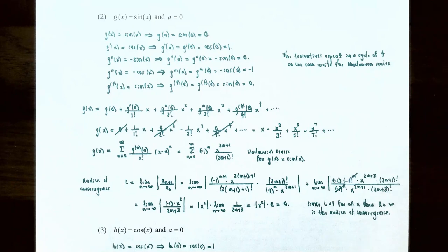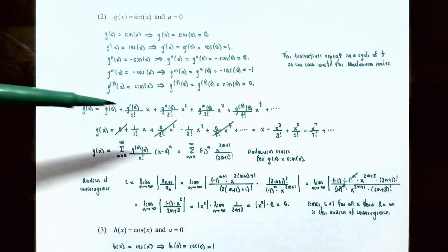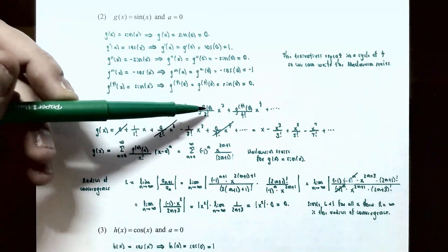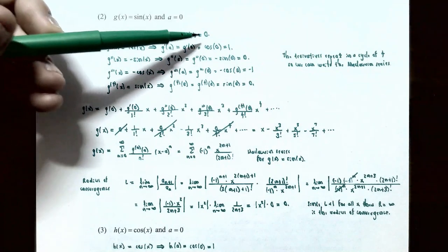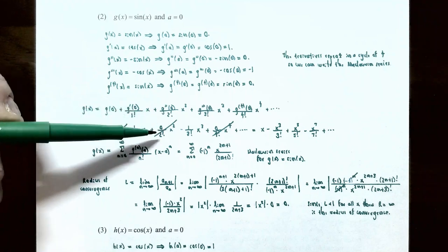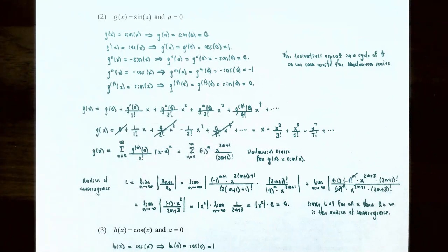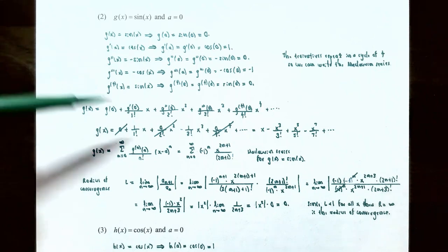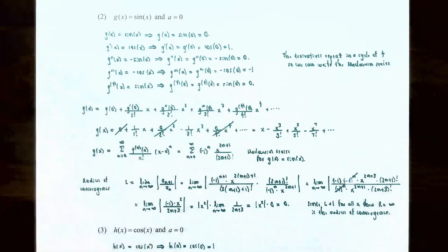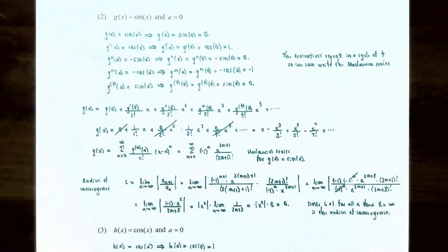Writing out the Maclaurin series: g(x) = g(0) + g'(0)·x/1! + g''(0)·x²/2! + g'''(0)·x³/3! + ... The even-order derivatives at 0 are all zero, so all even powers of x cancel out. The surviving terms are: x - x³/3! + x⁵/5! - x⁷/7! and so on, with alternating signs.